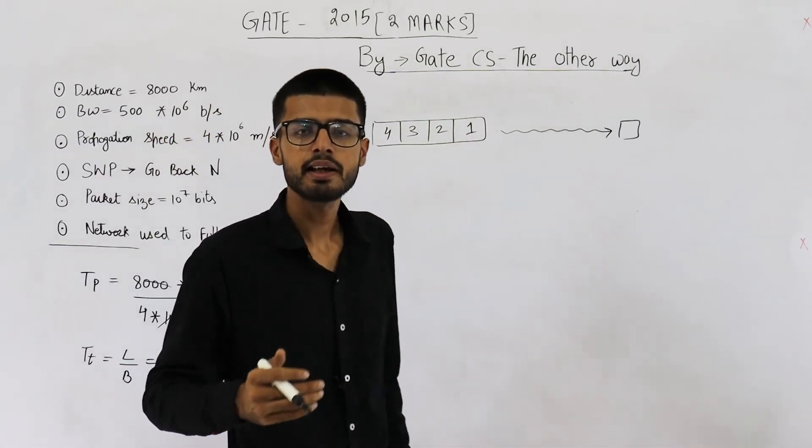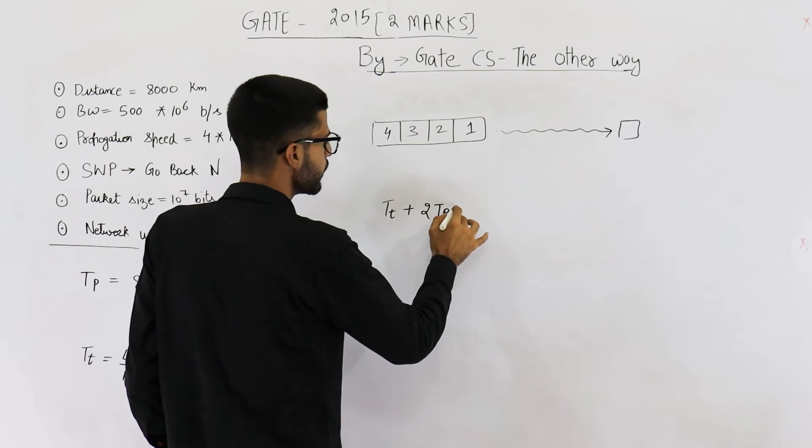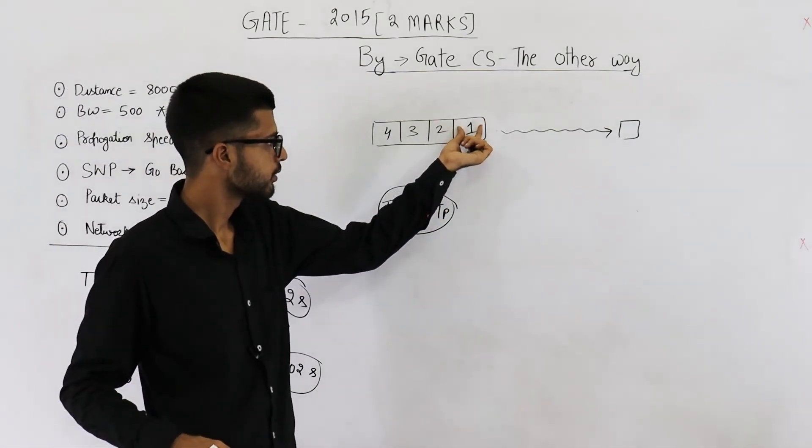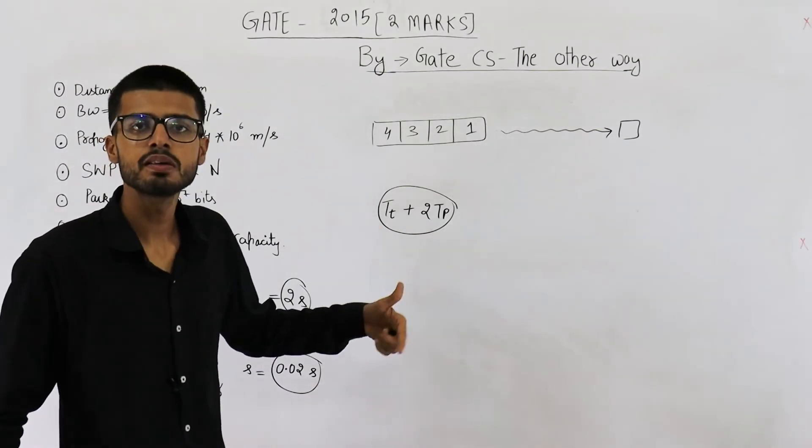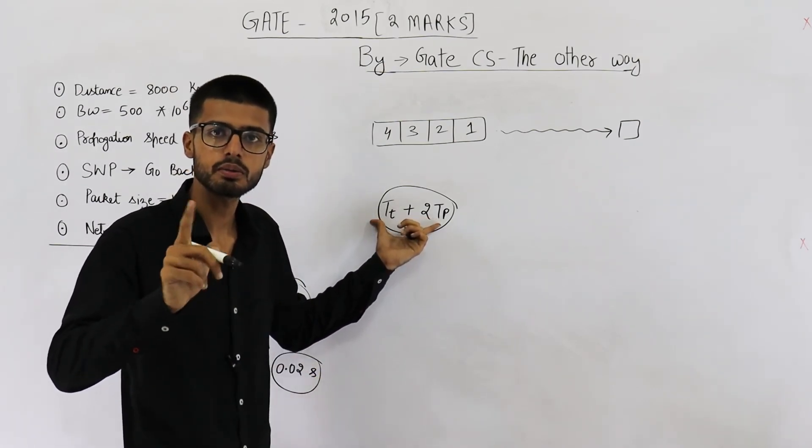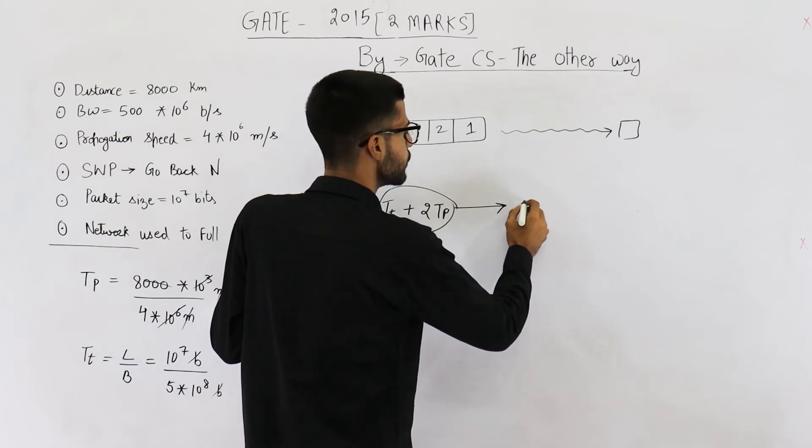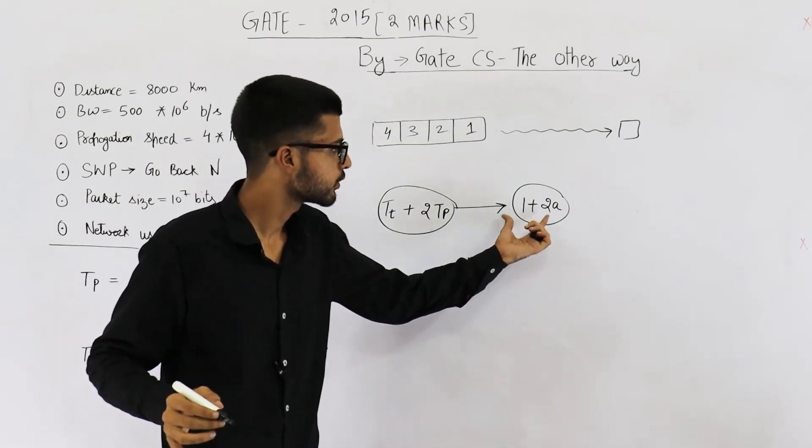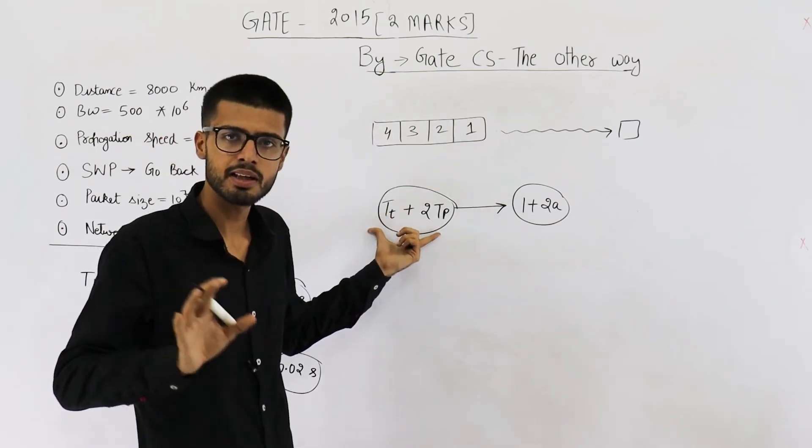Acknowledgement signal can take maximum of Tt transmission time plus 2Tp which is propagation time. After this much time, you will get an acknowledgement signal. That means first packet will take this much time for being acknowledged. But you are continuously sending packets. That means for this much time, we are continuously transmitting the packets. We are not waiting for acknowledgement, we are just transmitting them. Sender is continuously transmitting. And in this much time, you can send 1 plus 2a packets. All of these packets are unacknowledged. After this much time, only the first acknowledgement will be received because this much time is taken by acknowledgements.